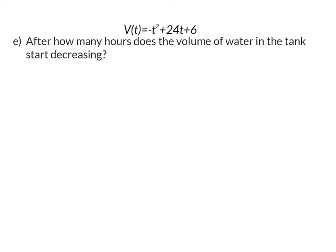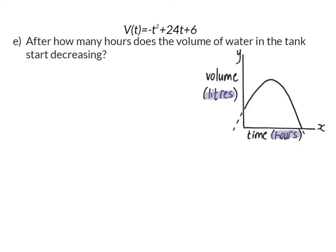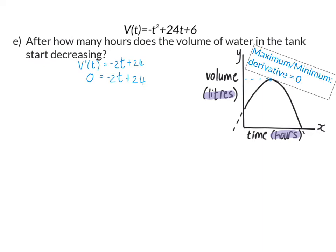Question E: After how many hours does the volume of water in the tank start decreasing? This will happen just after the volume has reached a maximum at the turning point, so we need to determine at what time the graph reaches its maximum. At the turning point, the derivative is equal to zero. You can always remember that to determine a maximum or minimum, take the derivative and set it equal to zero. Solving for t, we find that the tank reaches its maximum volume after 12 hours, so the volume will start decreasing just after 12 hours.